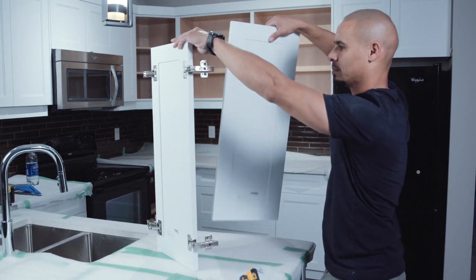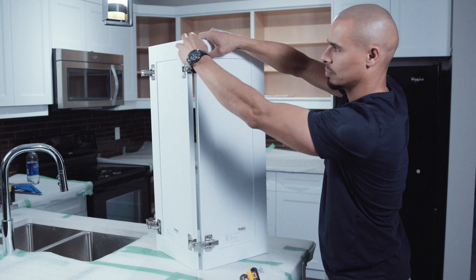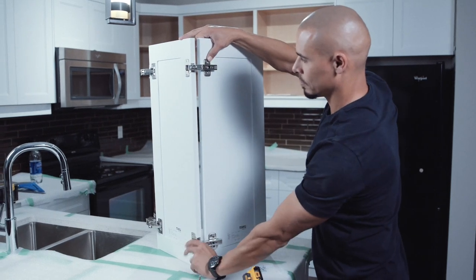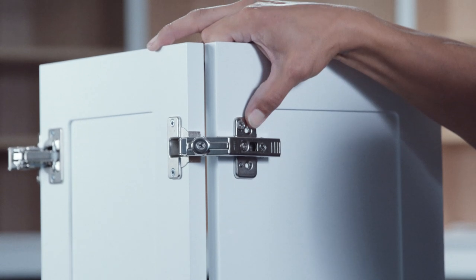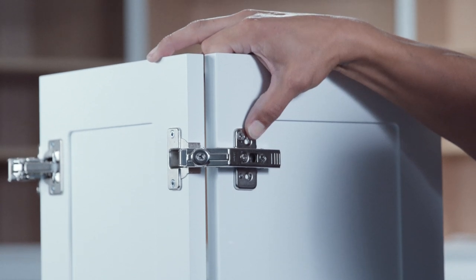Stand the doors on end to attach the two doors together. Position the doors at a 90 degree angle with a gap between the doors of approximately one eighth of an inch. The hinge arms are adjustable so you can fine tune the gap once they are installed.